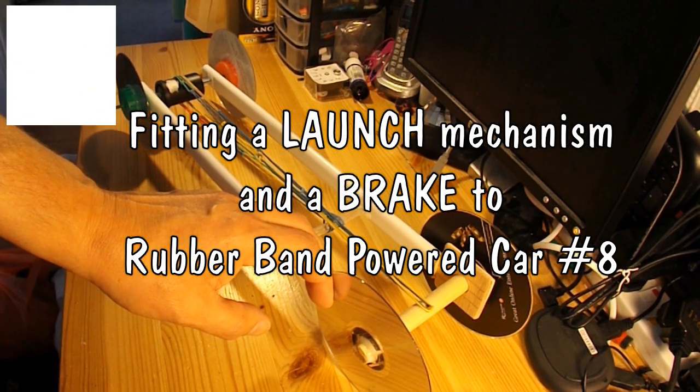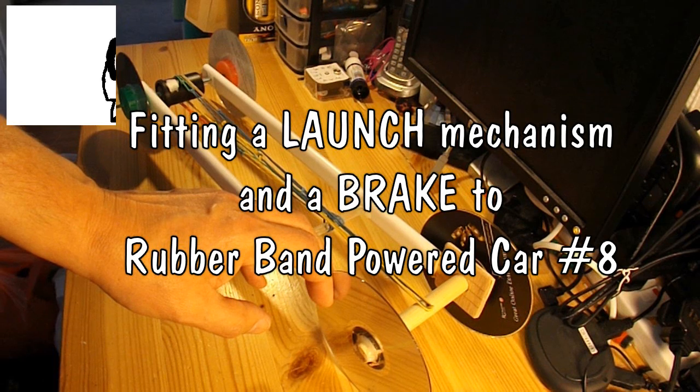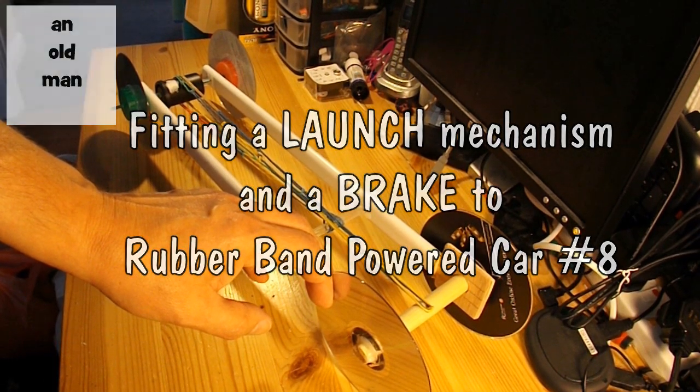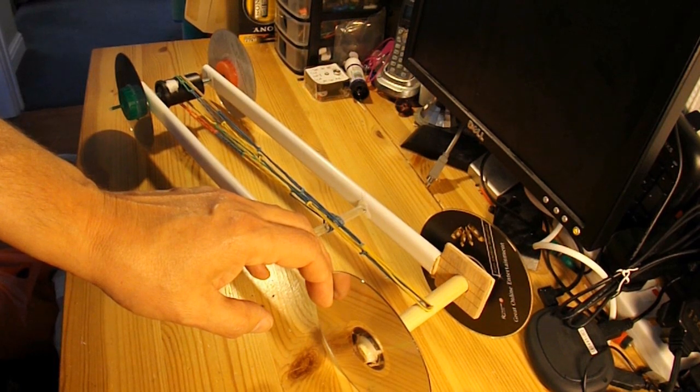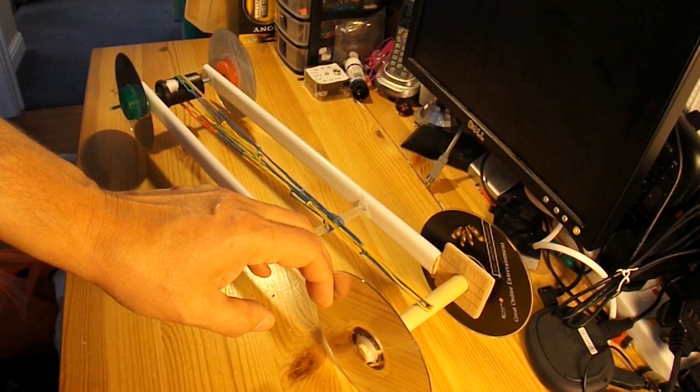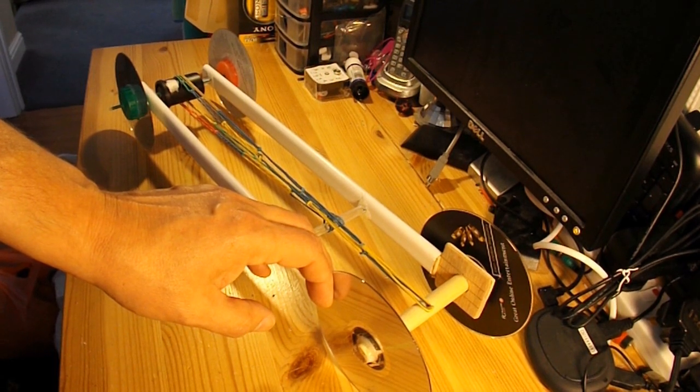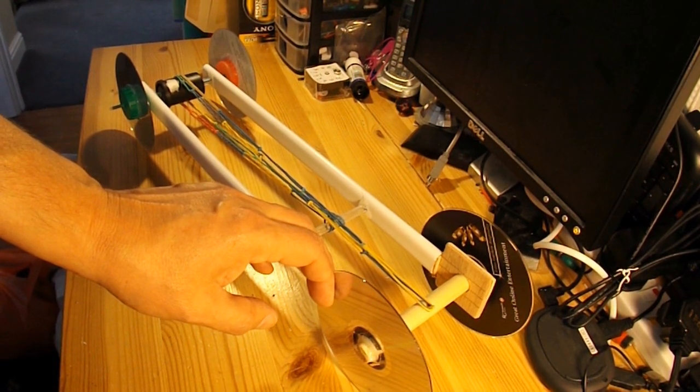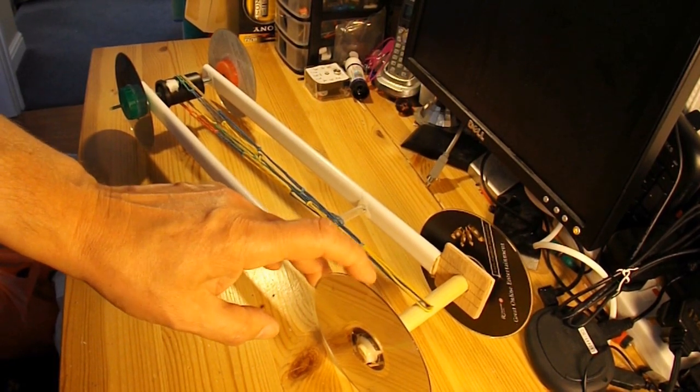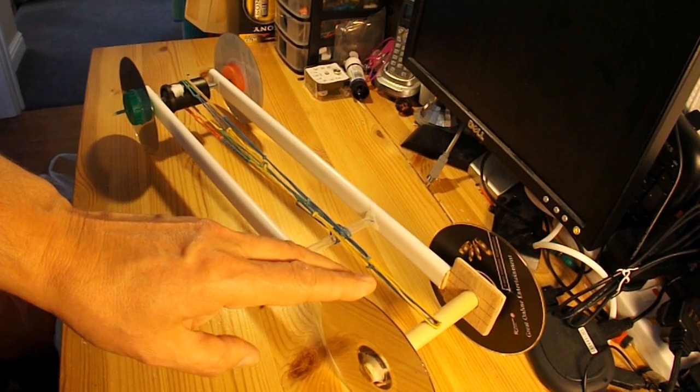Hi guys, I've been asked a couple of questions about my rubber band powered cars. Two particular questions I'm going to try and answer. One is, can I fit a launch mechanism? Basically a button that you can push that releases the car and lets it run rather than having to hold it like I am at the moment, hold the back wheel.